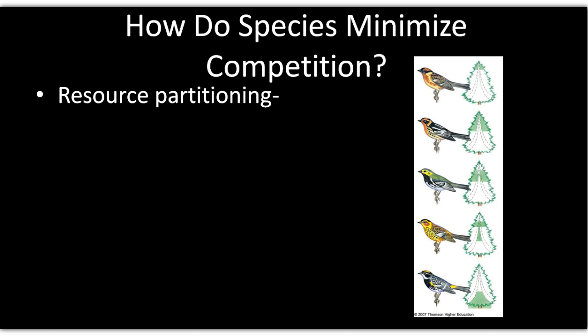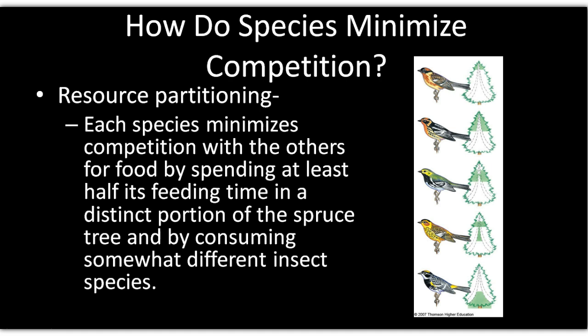Resource partitioning is one way species minimize competition. For example, different species of birds living in the same tree utilize different food sources — some at the bottom, some in the middle, some on the sides. As you can see, minimizing competition allows more species to inhabit a particular location.